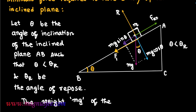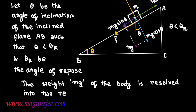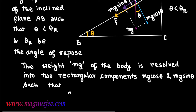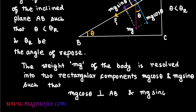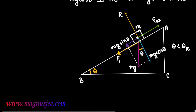The weight mg of the body placed on the inclined plane is resolved into two rectangular components: mg cos theta and mg sin theta. The rectangular component mg cos theta is perpendicular to the inclined plane AB, while mg sin theta acts parallel to the inclined plane AB.